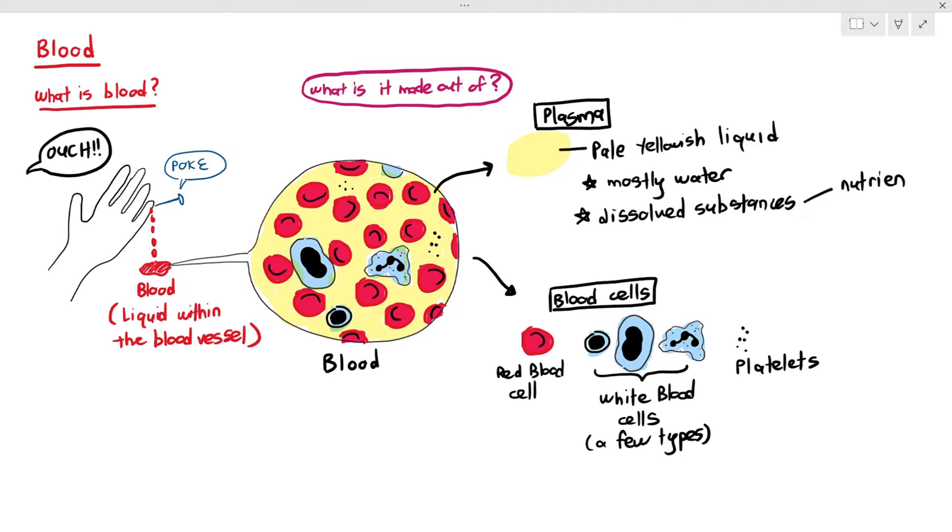And the dissolved substances may consist of nutrients, such as glucose, amino acids, vitamins. It may contain waste, such as urea, carbon dioxide, and it may have hormones dissolved within it, such as insulin, glucagon, and such.